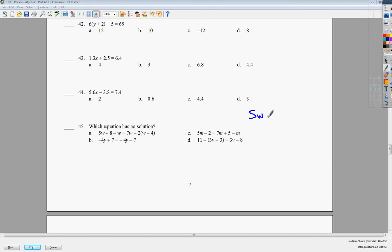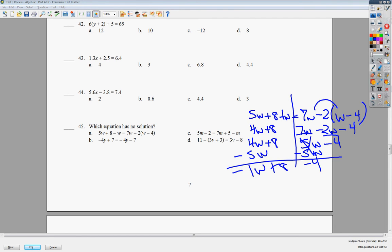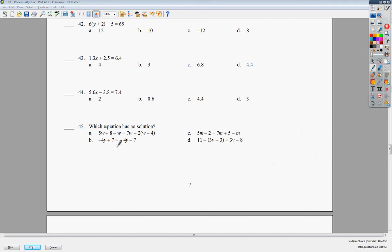So I'm going to start with a. I do 5w plus 8 minus w is equal to 7w minus 2 times the quantity w minus 4. Draw my line. I'm going to combine like terms, so 5 minus 1 gives me 4w. 7w negative 2 times w is negative 2w minus 4. If I subtract 5w here, I still have w left over, so I know this is not the right answer. If your variable stays, it's not no solution.